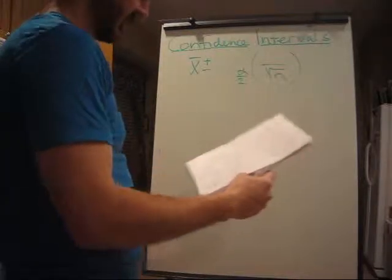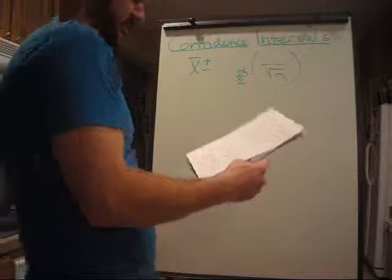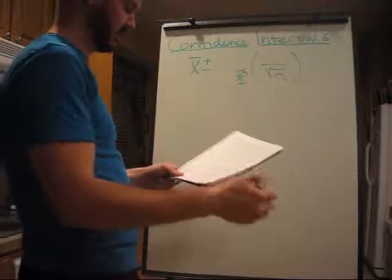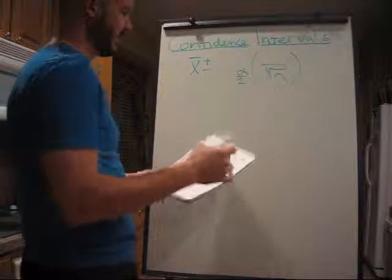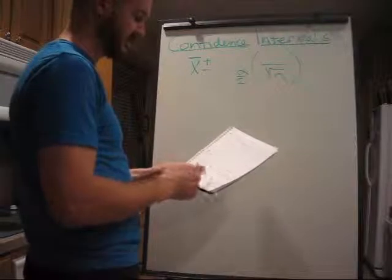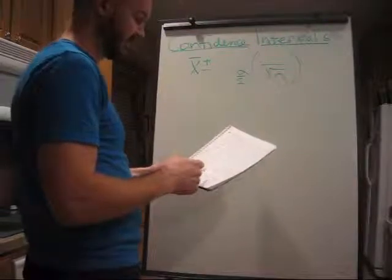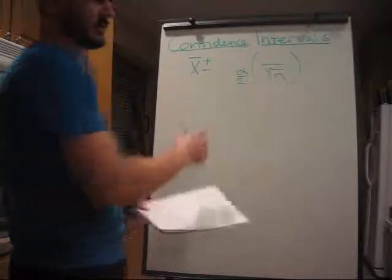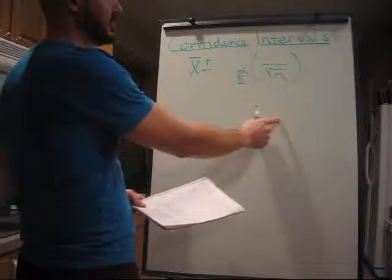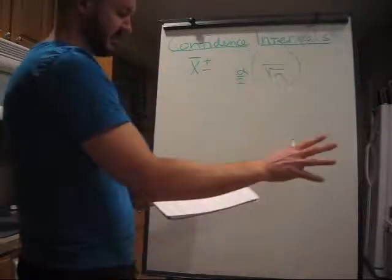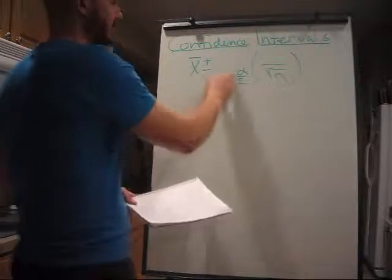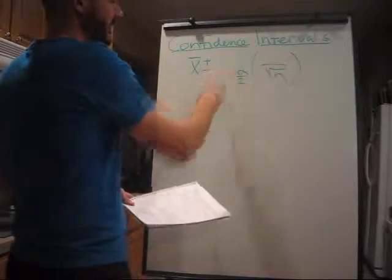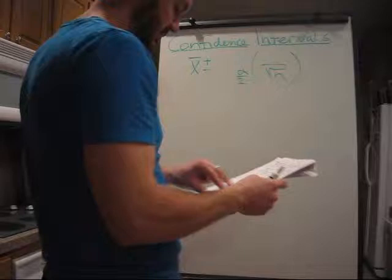So, actually before I go on, you can use the calculator, go stat, test, and then number seven is z-interval, enter. And then use, it's got data and stats, use stats, plug those numbers in, and it'll spit out your confidence interval. But, it's best to do it both ways to make sure you got it right, obviously.